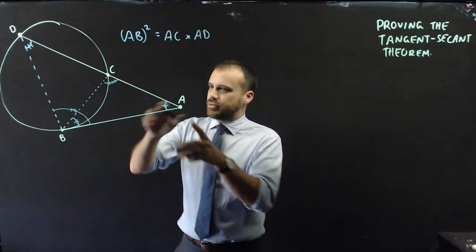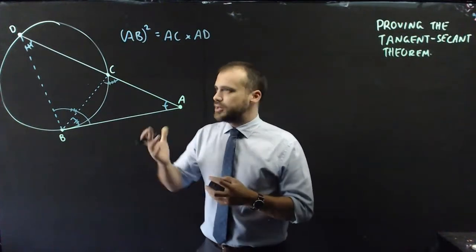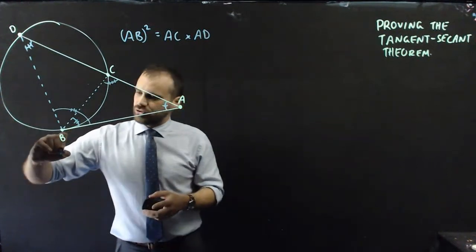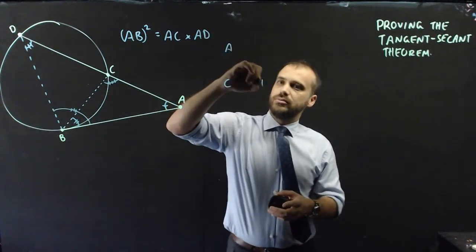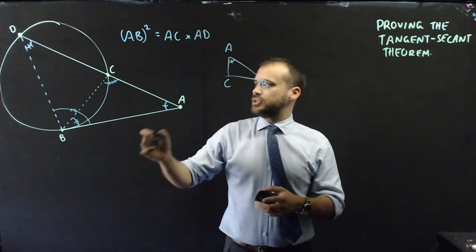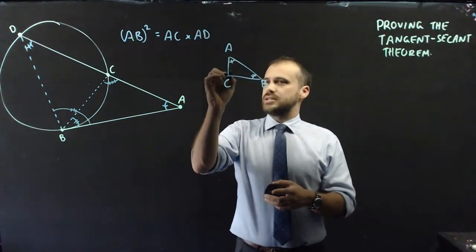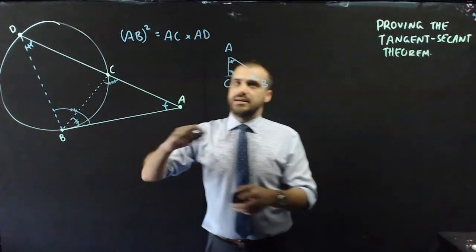When we draw in what our triangles are, we need to make sure that we're drawing them correctly. So triangle—I'll draw it up here—ACB like that. Now A has a single dash, B has a double dash, and C has a triple dash.